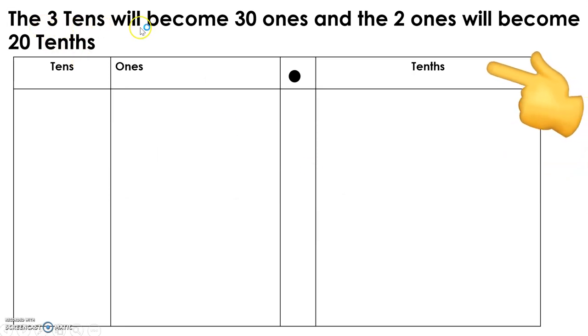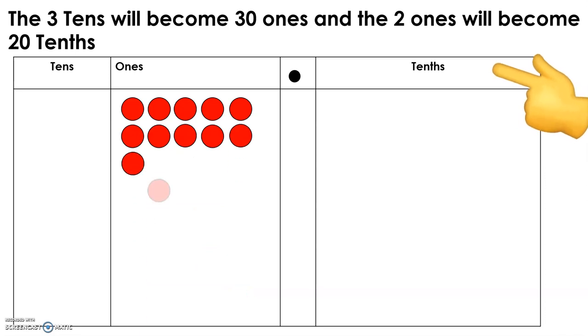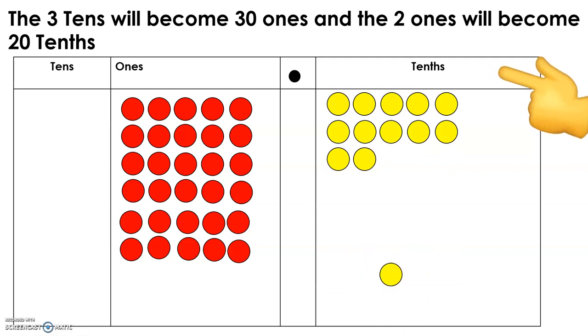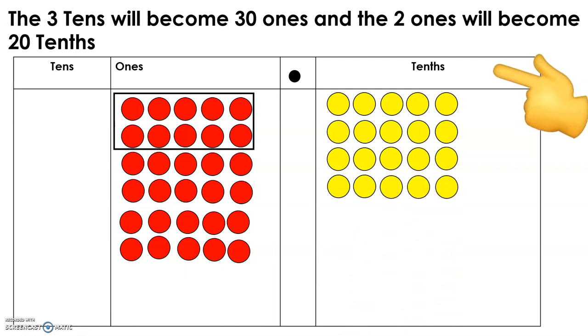There are three tens and it will become thirty ones, and the two ones will become twenty tenths. So let's count: five, six, seven, eight. All right, so there are thirty. Let's continue first to the tens.